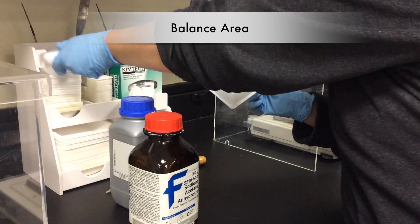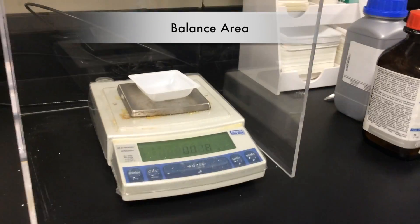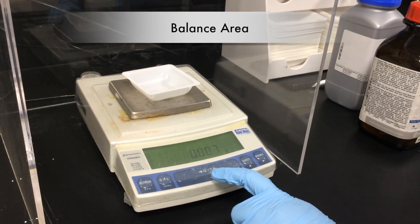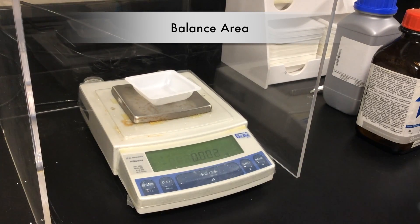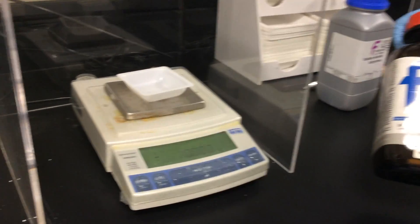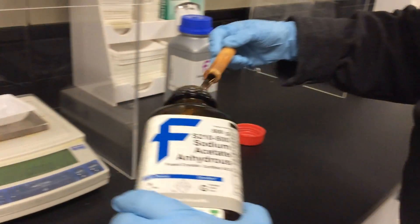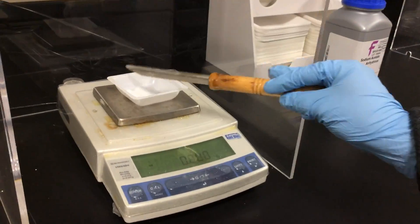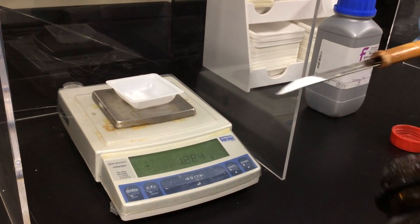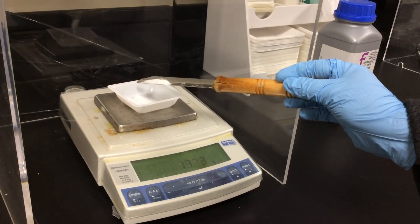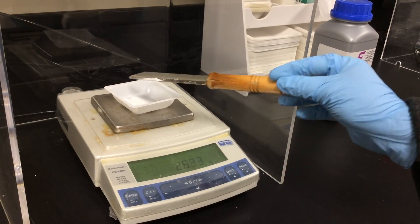Now we're going to start getting our chemicals for mixture B. We're coming over to the balance area, taring the balance. Once it's zeroed, we will add 2.4 grams of anhydrous sodium acetate. As you put sodium acetate into your weighing boat, you want to weigh out as closely to 2.4 grams as possible.